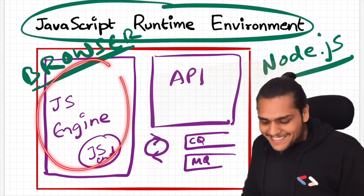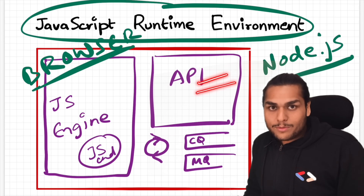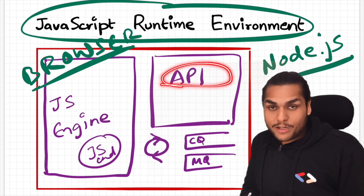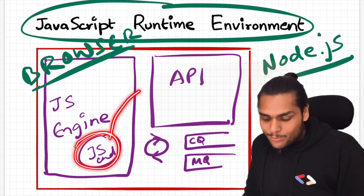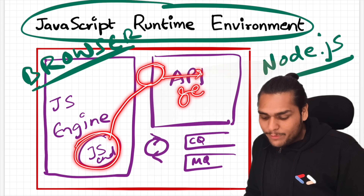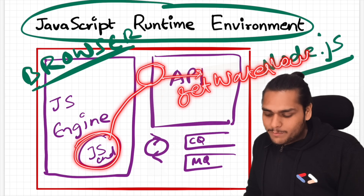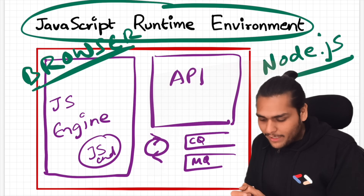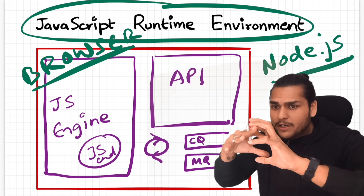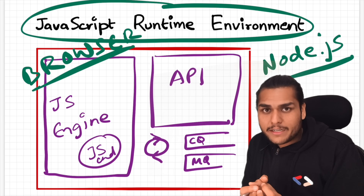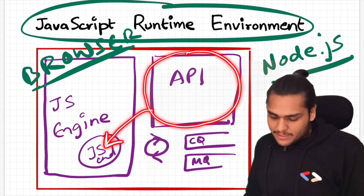The water cooler can have a JavaScript engine, and these APIs could be different inside it — for example, an API like 'get water level' which you can use in your JavaScript code through a global object, and that gets the water level from the water cooler. That is why JavaScript is capable of running on a lot of devices, and these APIs give access to superpowers we can use inside our JavaScript code.